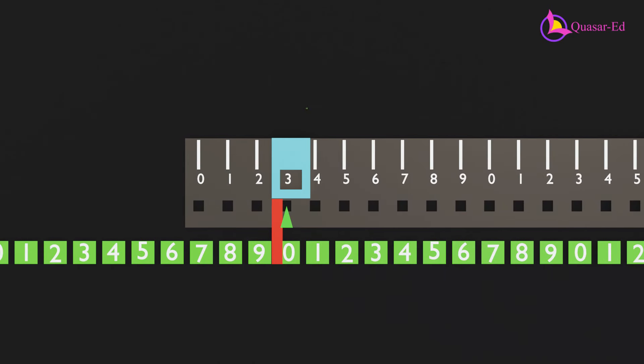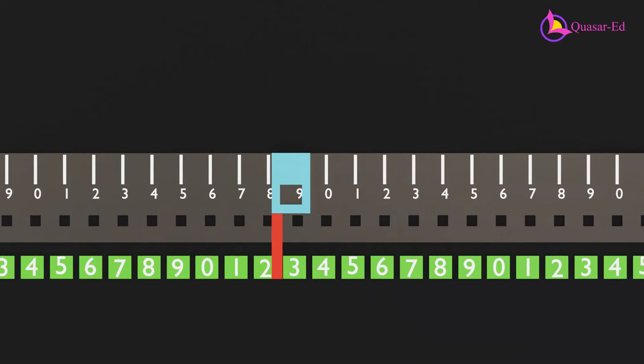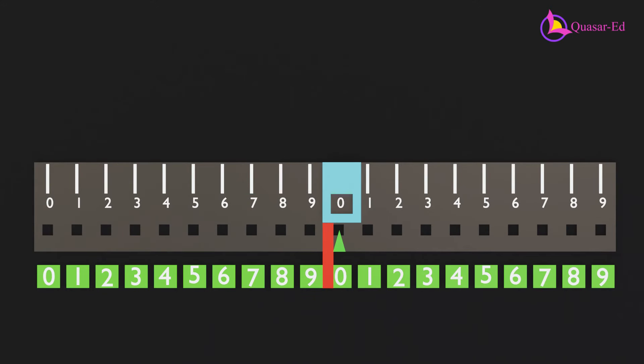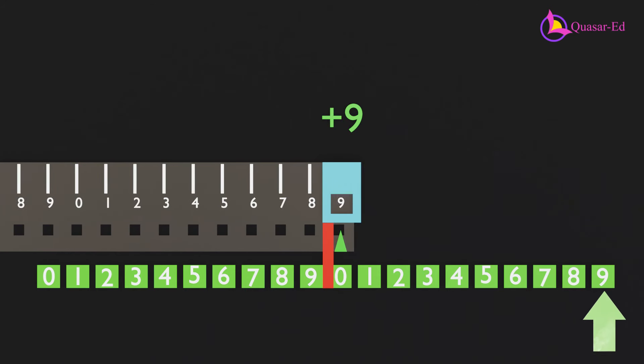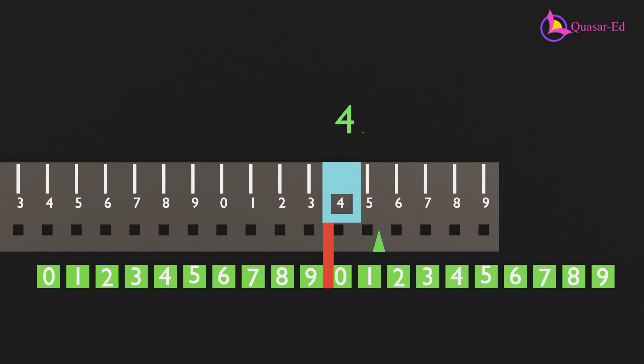This backward movement means we don't need an infinite number of steps. Instead, we can use a ruler with only two sets of 0 to 9 numbers. For example, to add 9, we move the ruler left using the reference point at the right side. When the ruler can no longer move left, adding 1 requires using the reference point 1 at the left side. If the ruler is at 4, we can only add 5 by moving left. To add 6, we use the number 6 on the left side.